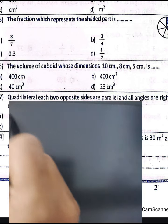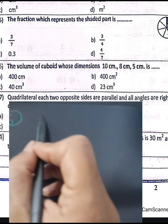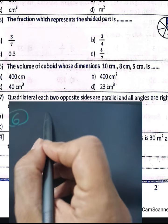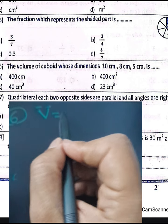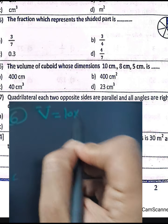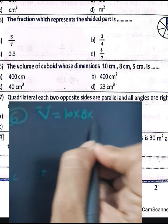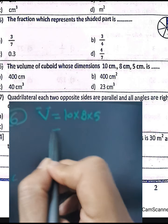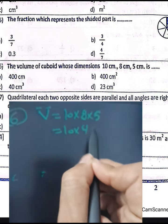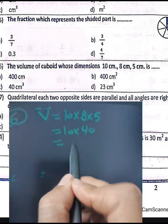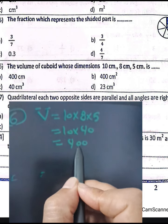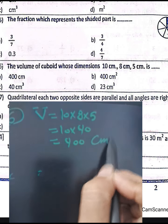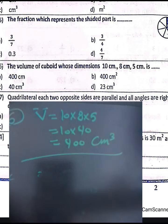Question number six: find the volume of a cuboid with dimensions 10, 8, and 5. Calculate: 8 times 5 equals 40, and 40 times 10 equals 400 cubic centimeters.